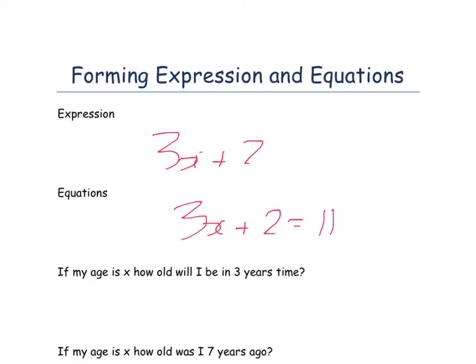Well, this top one is an expression, and you'll notice that it doesn't contain an equal sign like the equation. So when we've got an equation, it's where we take an expression and we set it equal to something. In this case, we took our 3x plus 2, our expression, and we made it equal to 11 to turn it into an equation.